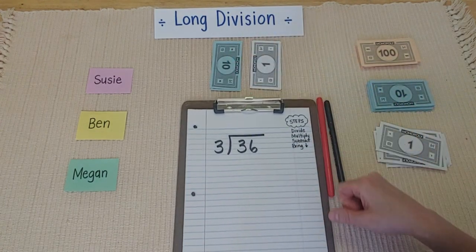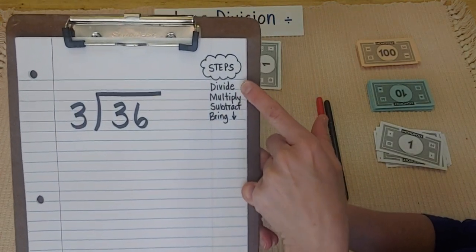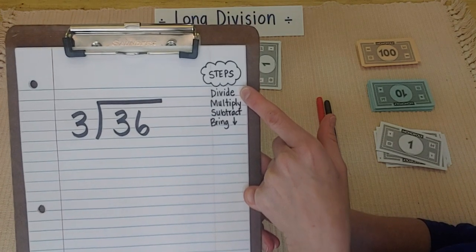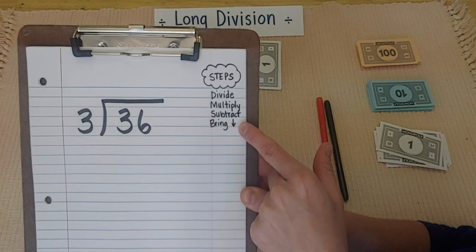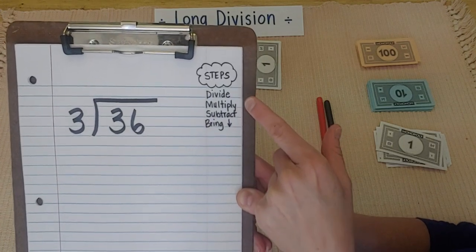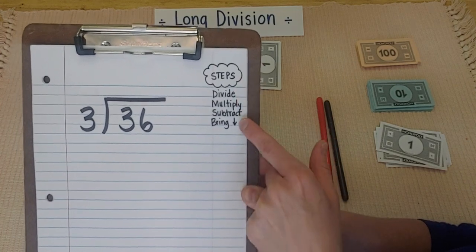So, if you notice on my paper, I'll hold it up for you. I have some steps here. We're going to divide first. That means share the money out as best as we can. And then multiply, subtract, bring down. Divide, multiply, subtract, bring down. These are the 4 steps.